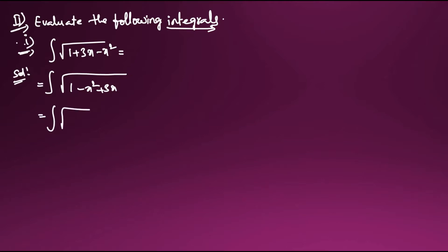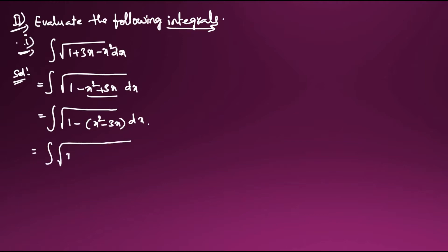So this is equal to integral √(...) dx. I will factor out a minus from the two terms x² and 3x, giving integral √(1 - (x² - 3x)) dx. After that I will work with integral √(1 - (x² - 3x)).